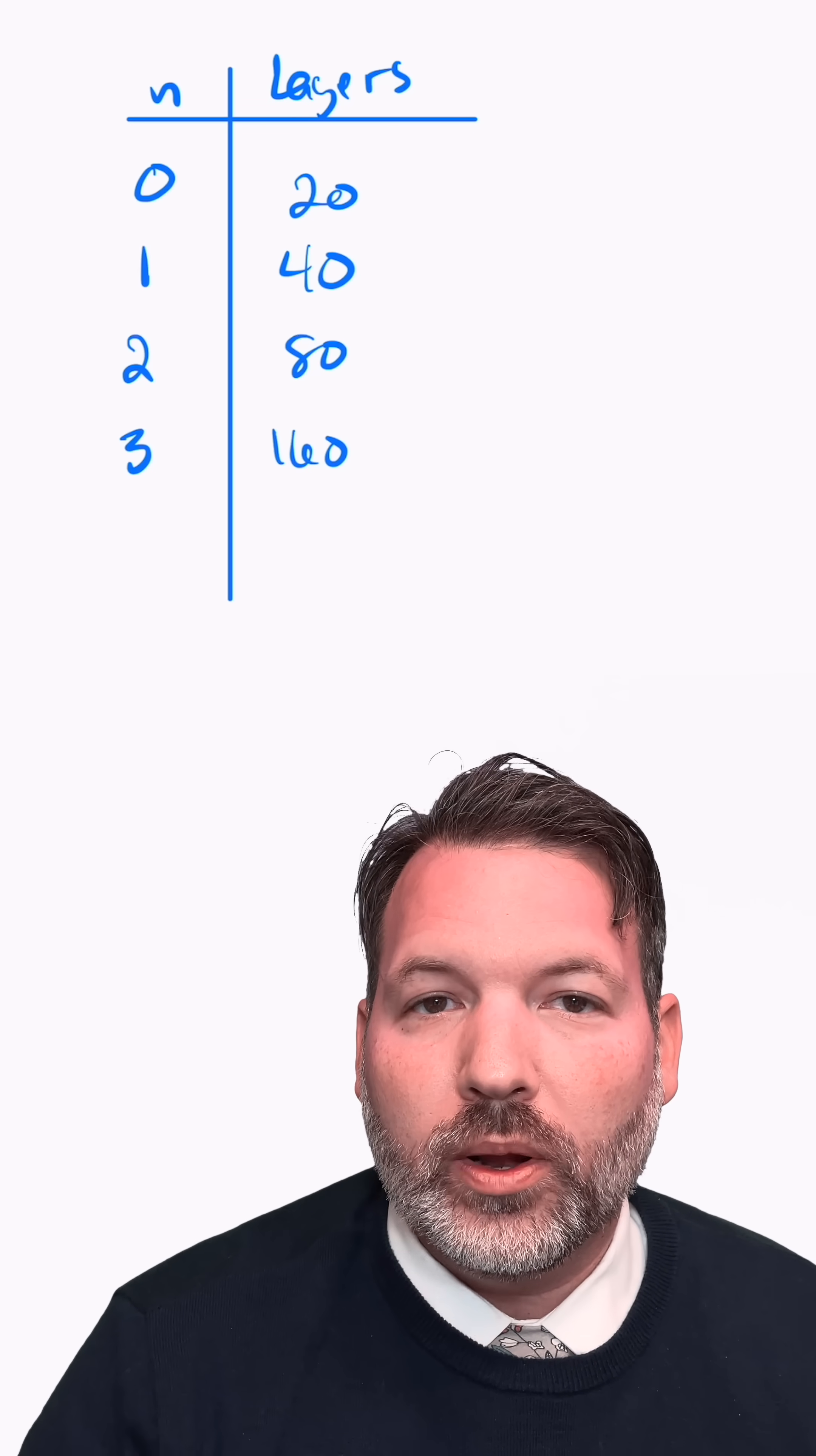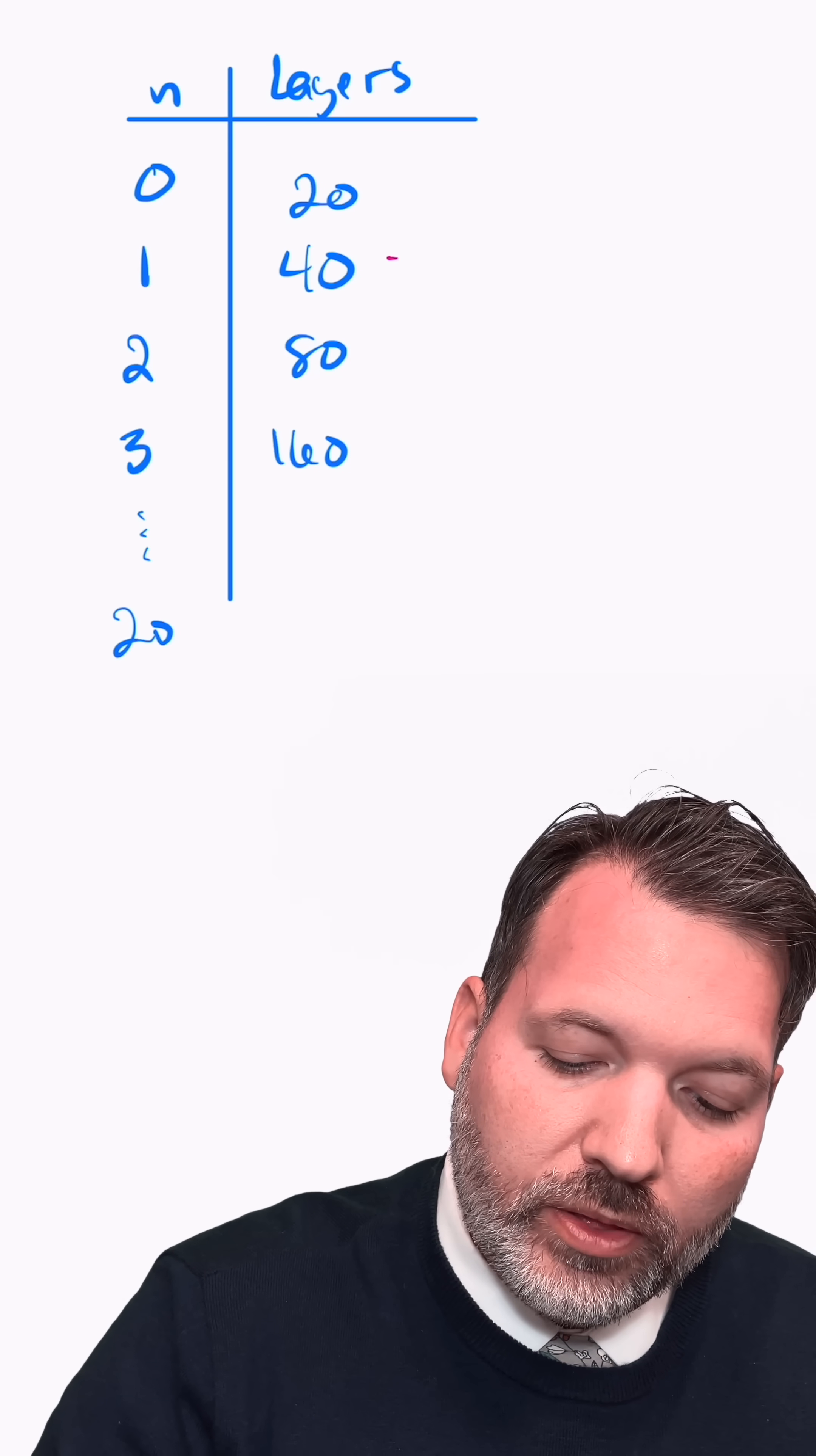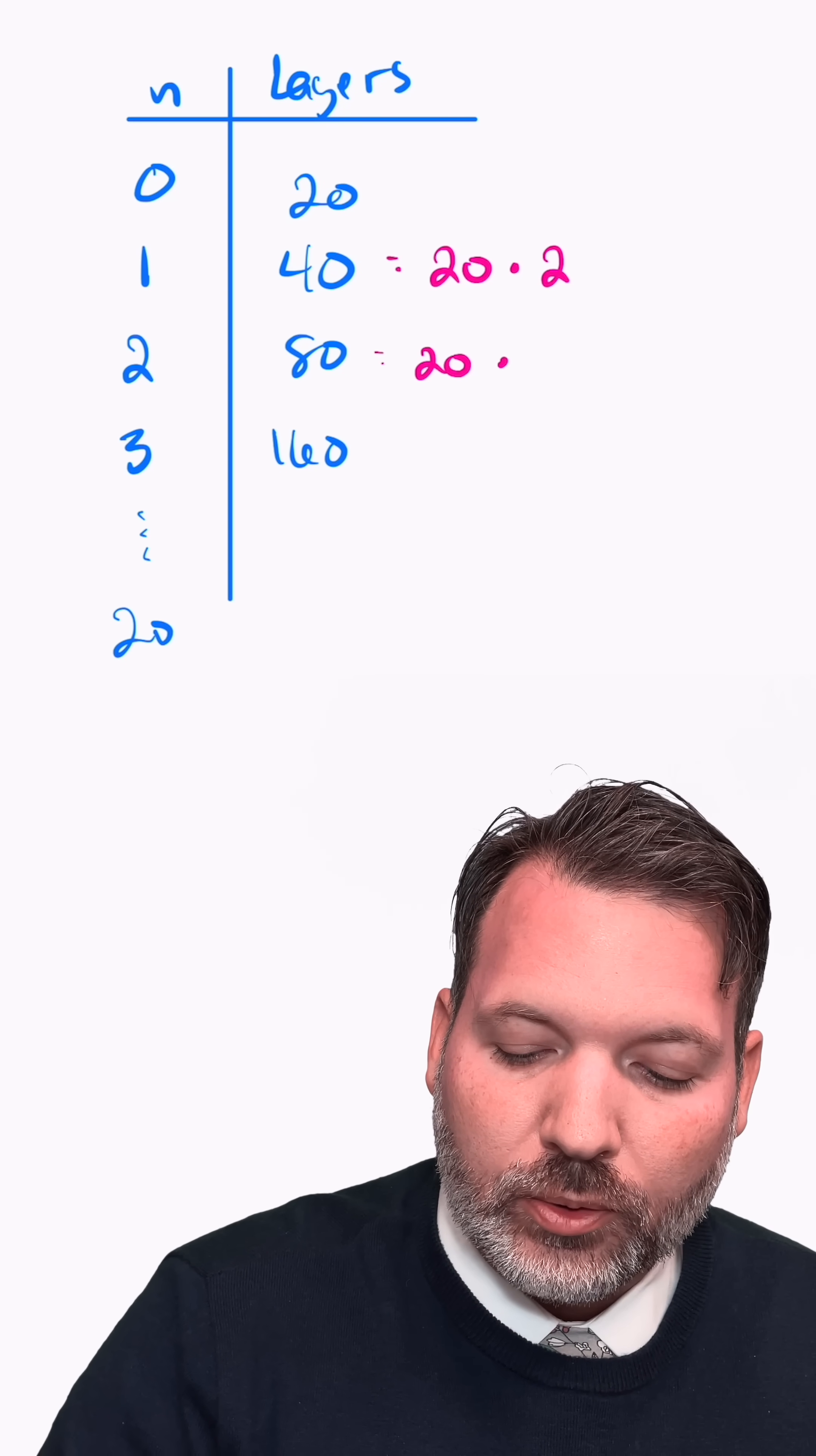And I can start to tell what my equation is going to look like that is going to give us the nth cut in this particular case. Take for example, what's going on after that first cut. We know that we started with 20 layers and then it doubled to get us to 40.